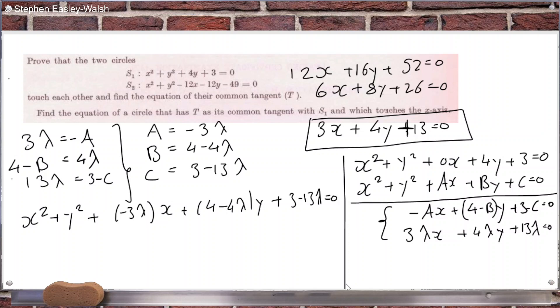So we're told that it touches the x-axis. So let me think what that can mean for values. If it touches the x-axis, it means that when y is 0, there should only be one solution. So when y is 0, we get the quadratic x squared minus 3 lambda x plus 3 minus 13 lambda. That quadratic should have only one solution. The discriminant should be 0. So that means b squared minus 4ac equals 0.